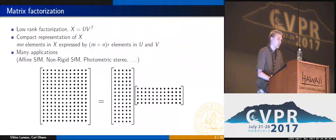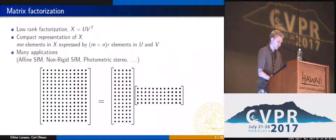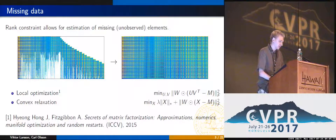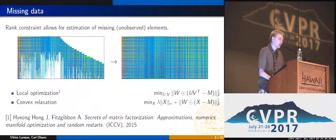There are many applications in computer vision, such as affine structure from motion, both in the rigid and non-rigid setting, as well as photometric stereo and many others. The rank constraint allows us to estimate missing or unobserved entries of the matrix. This is typically performed using local optimization directly on the bi-linear factorization. There are also convex relaxation approaches using the nuclear norm, which can work well in some settings.